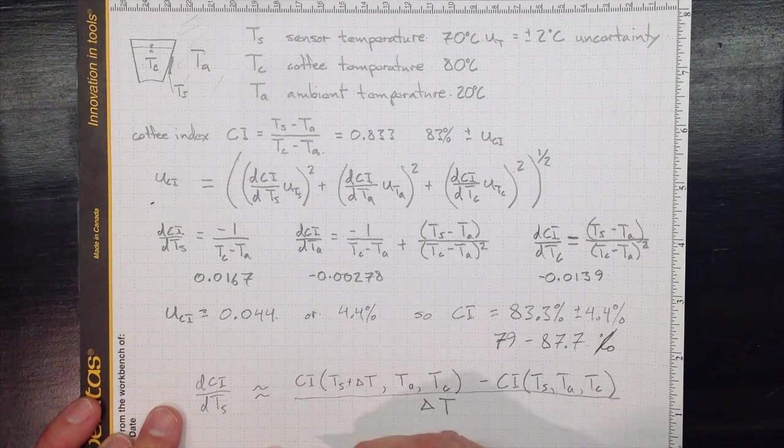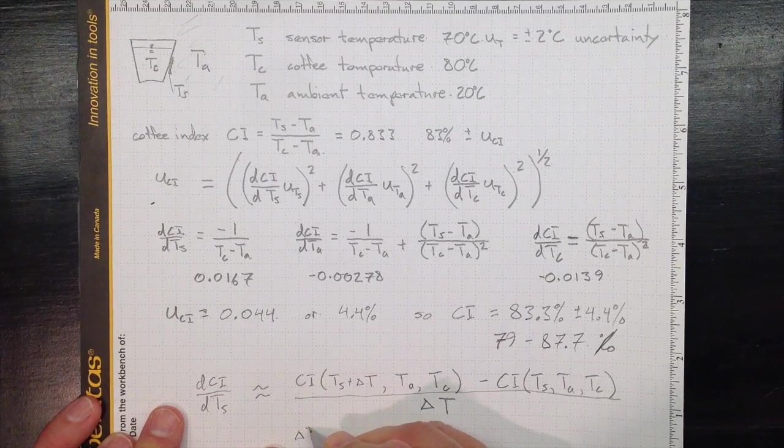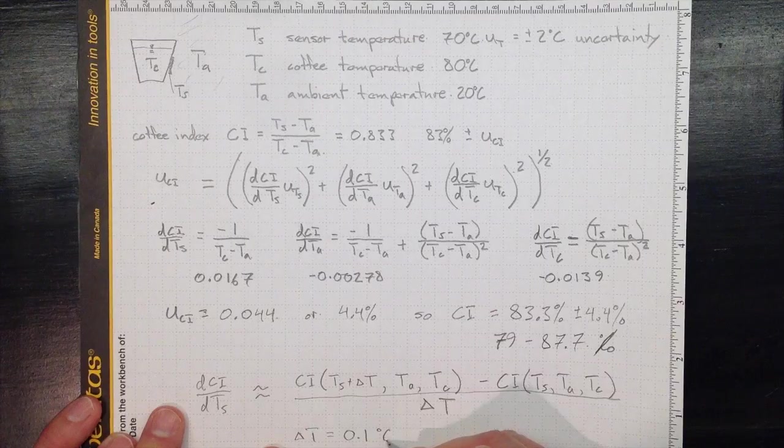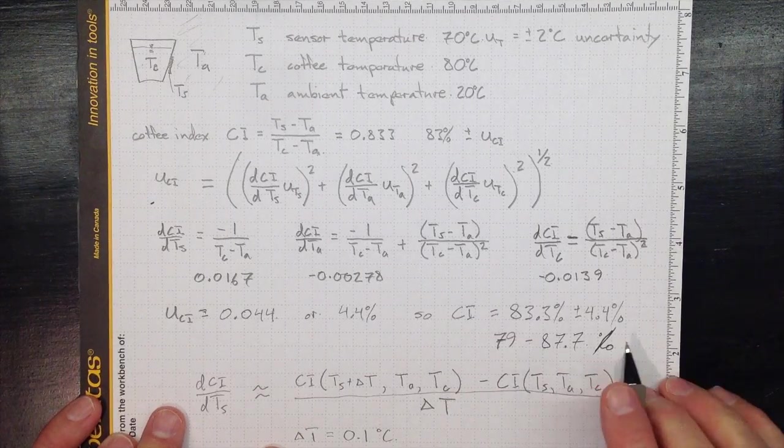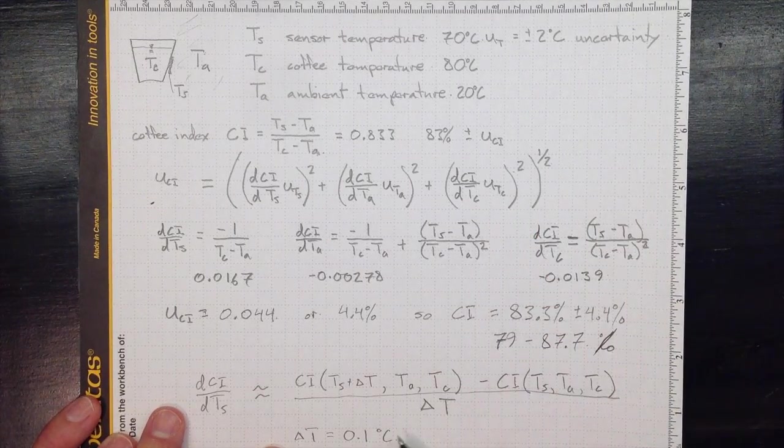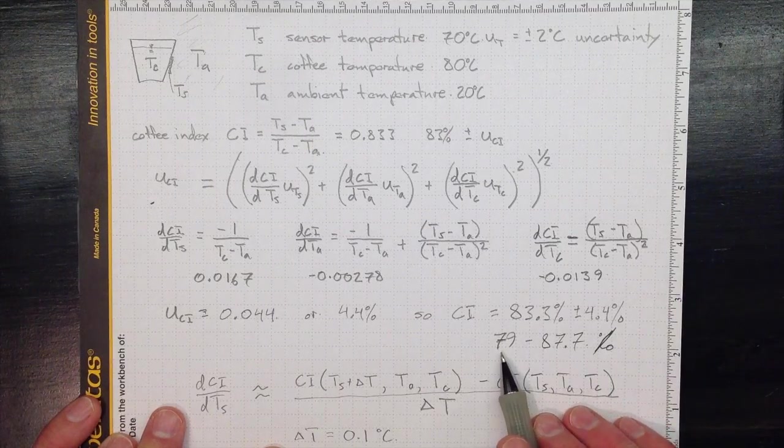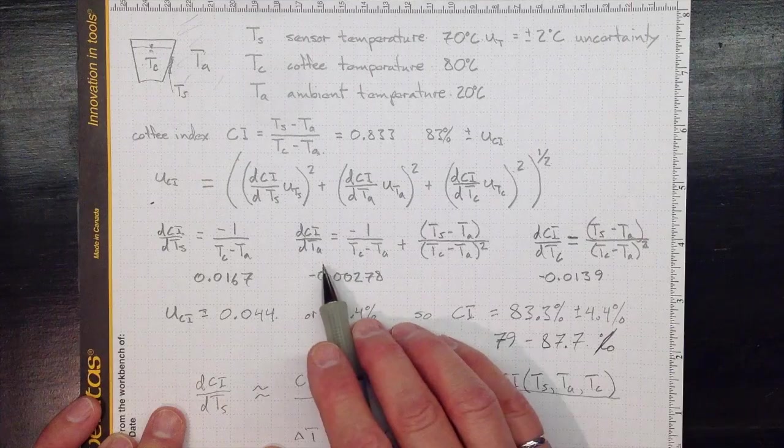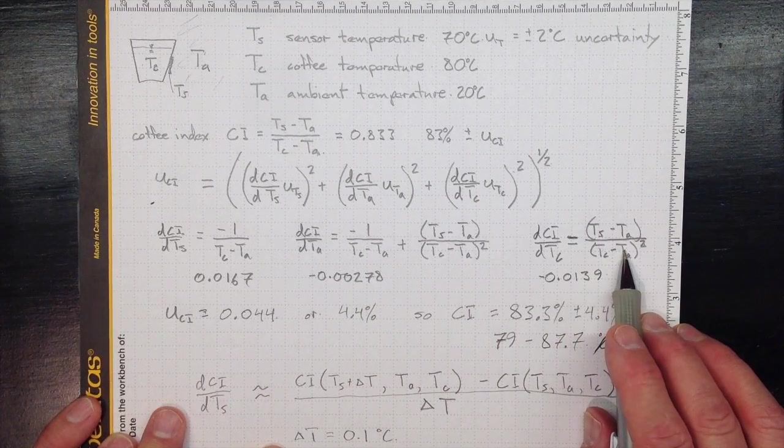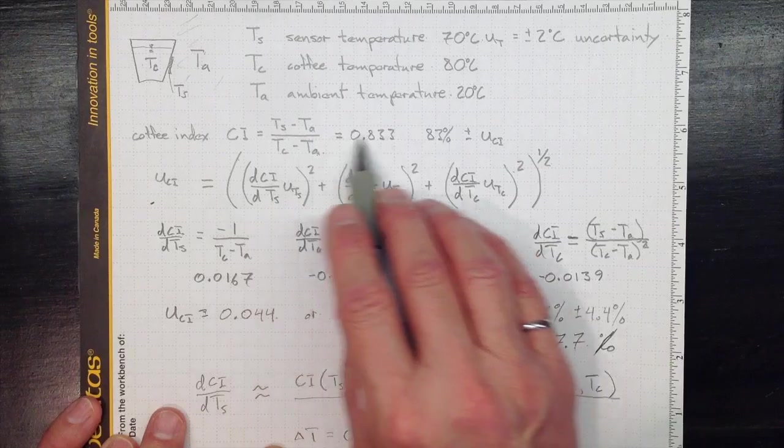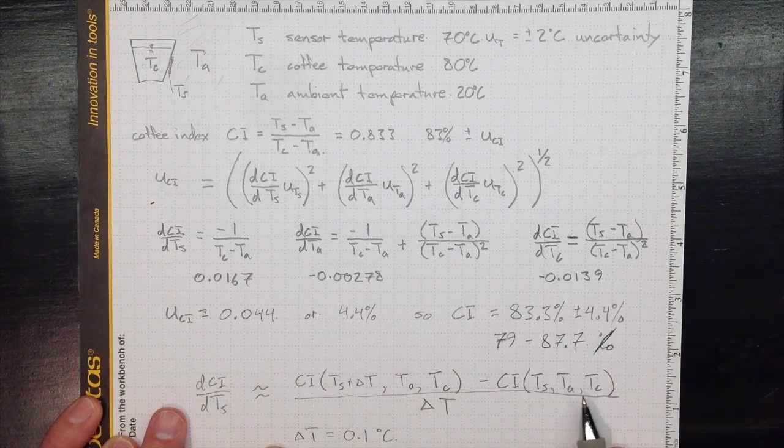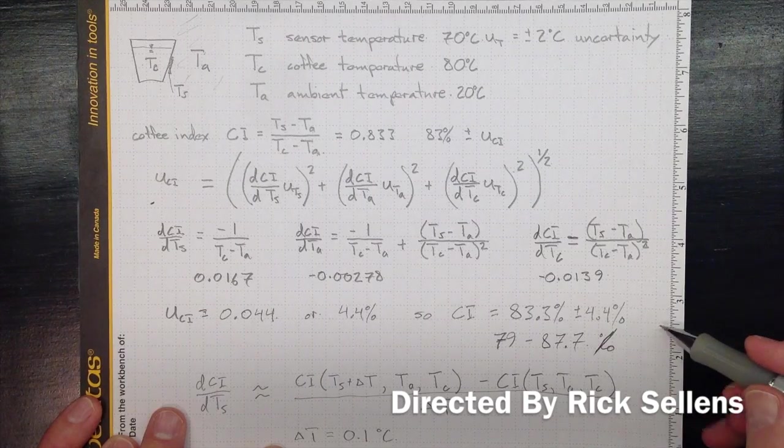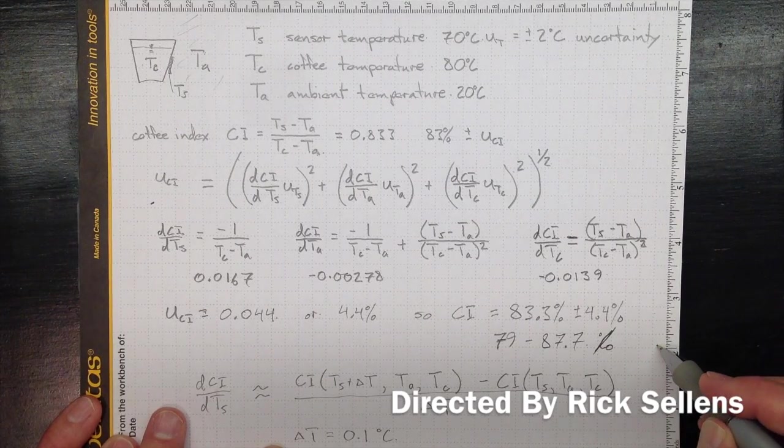And if we do that calculation with delta T equal to 0.1 degrees Celsius, then all of the numbers that we get out from our calculation wind up being the same as what we got from doing the calculus analytically. If you can do this calculus, then by all means do the calculus. If you're having difficulty getting the derivatives, this estimate for the derivative, this finite difference estimate, will still give you a good answer for your uncertainty.